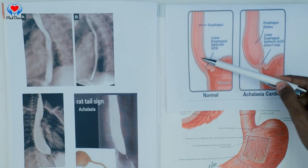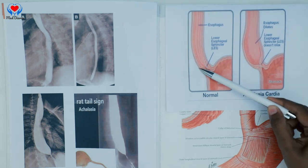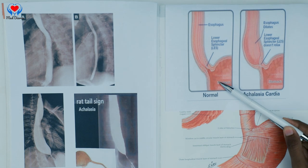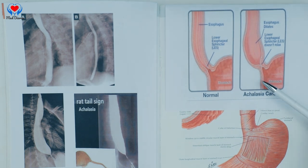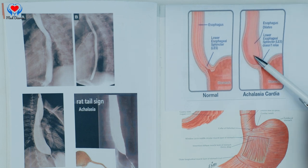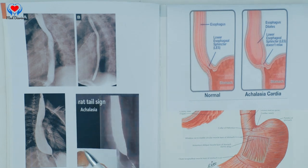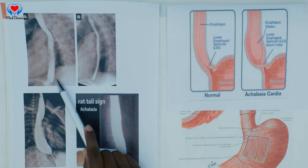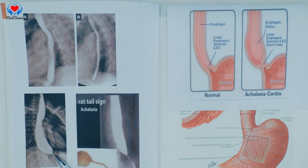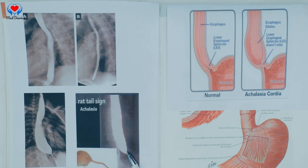Now we move to another clinical condition known as achalasia cardia, which occurs due to neuromuscular incoordination. When we swallow food, the deglutition reflex causes the lower esophageal sphincter to relax and allow food to enter the stomach. If it does not relax, food accumulates in the esophagus and cannot pass to the stomach, causing a dilated esophagus. On barium swallow test, this is the normal esophagus — and this is the esophagus with achalasia cardia, showing the dilated portion. You can notice the rat-tail sign in the lower part of the esophagus.